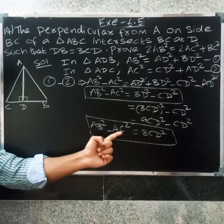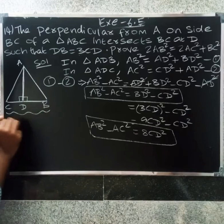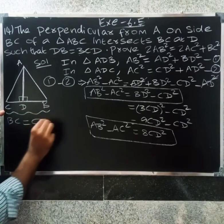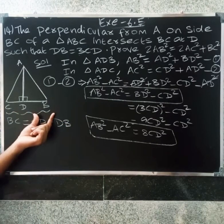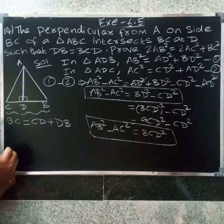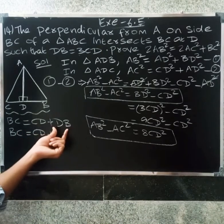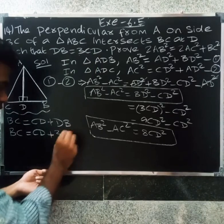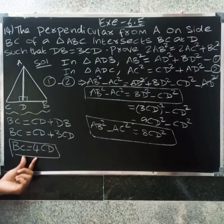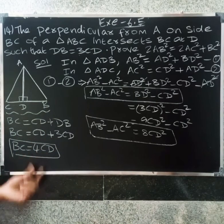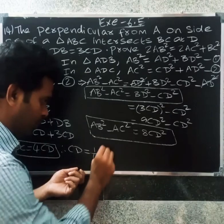AB square minus AC square equal to BD square minus CD square. Now, BC equal to CD plus DB. Since DB equals 3CD, total BC equal to 3CD plus CD, so BC equal to 4CD, therefore CD equal to one-quarter BC.